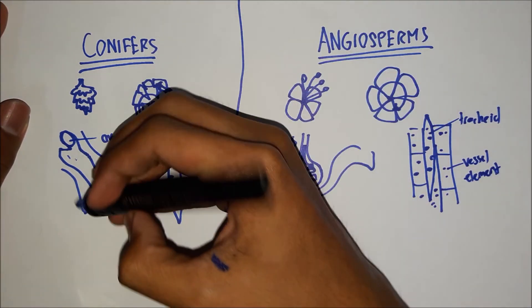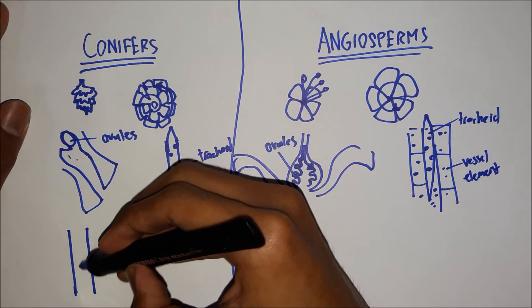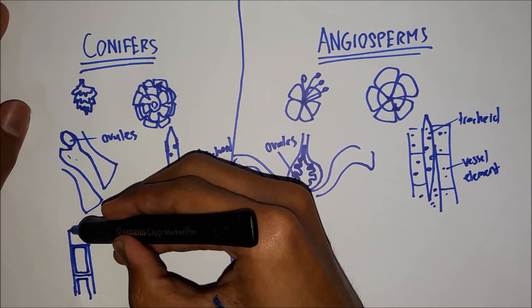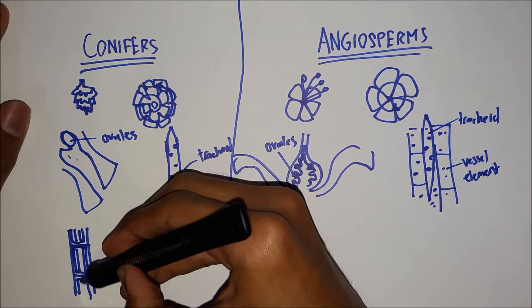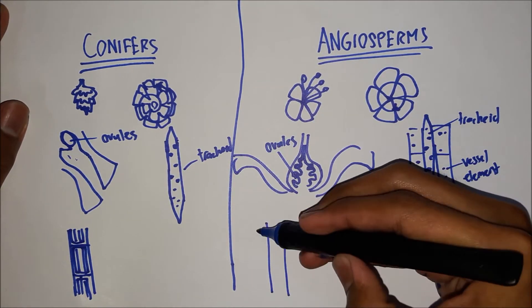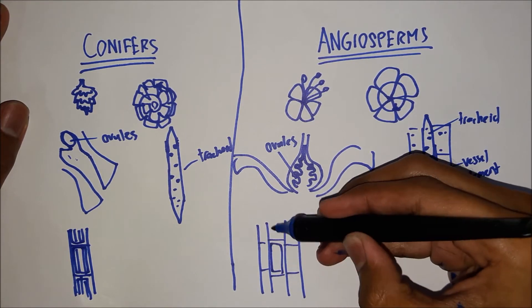Also, in conifers, the phloem, the structure which transports organic substances, only consists of the sieve-tube cells. While in angiosperms, the phloem is accompanied by companion cells.